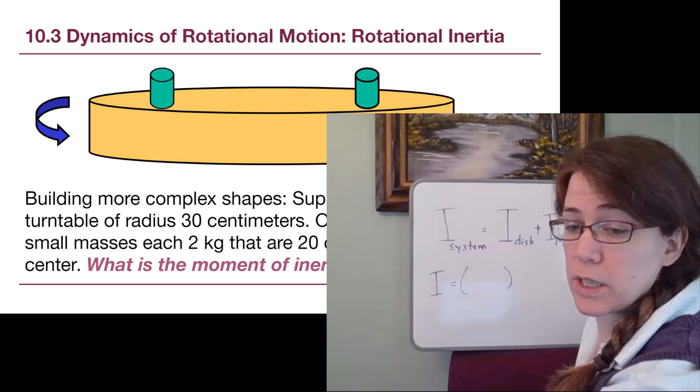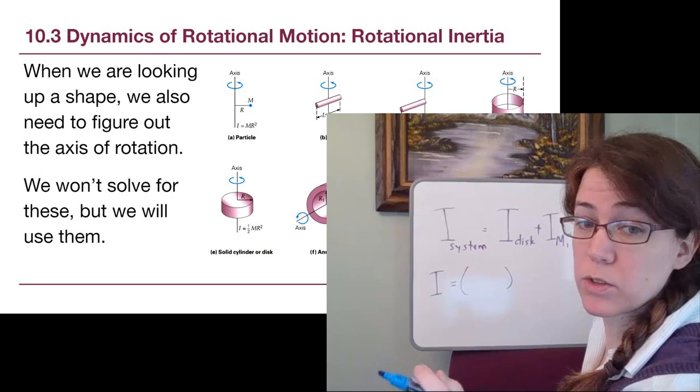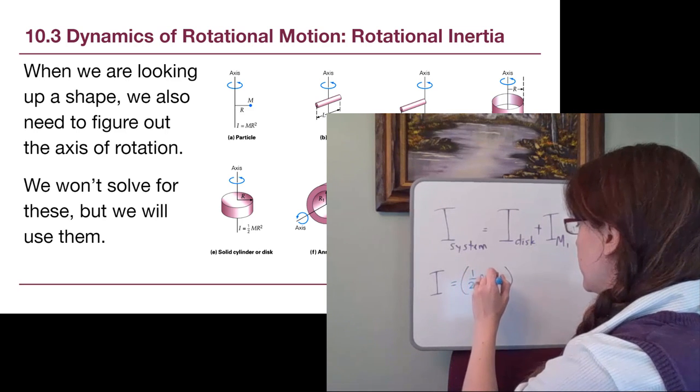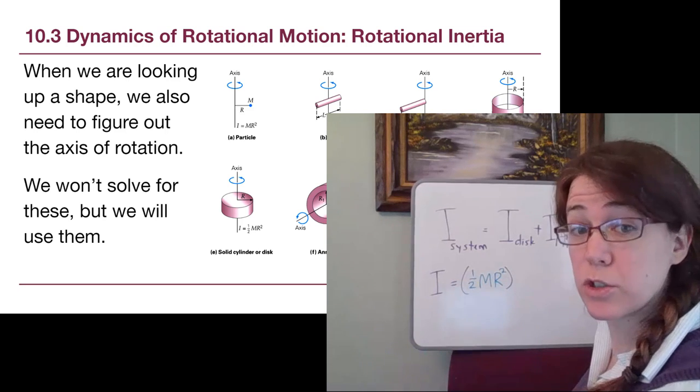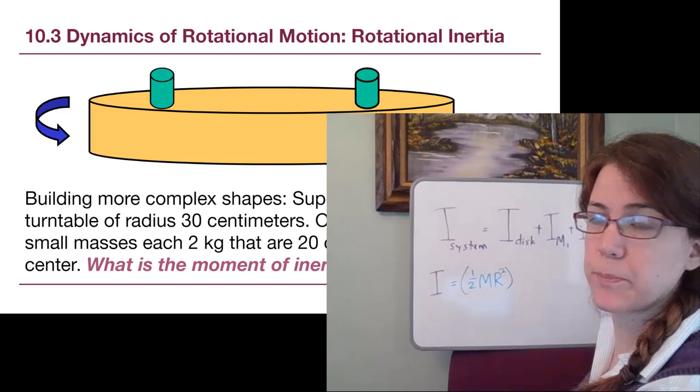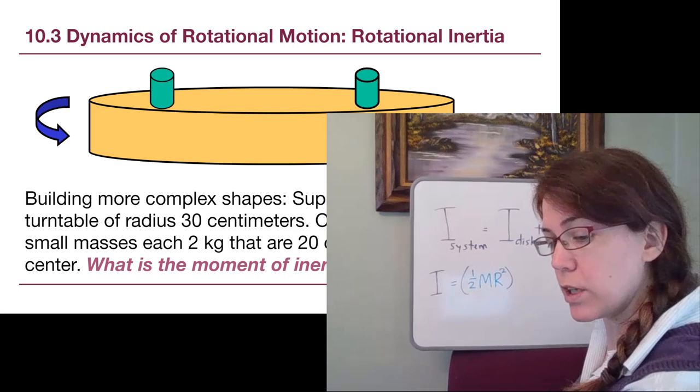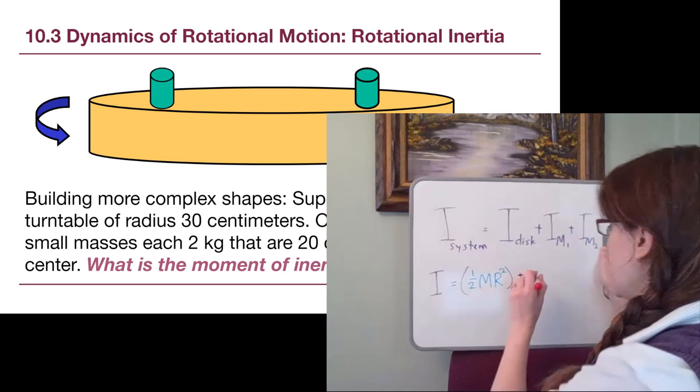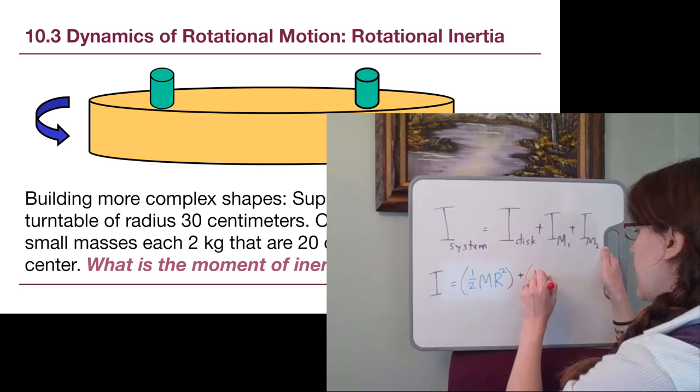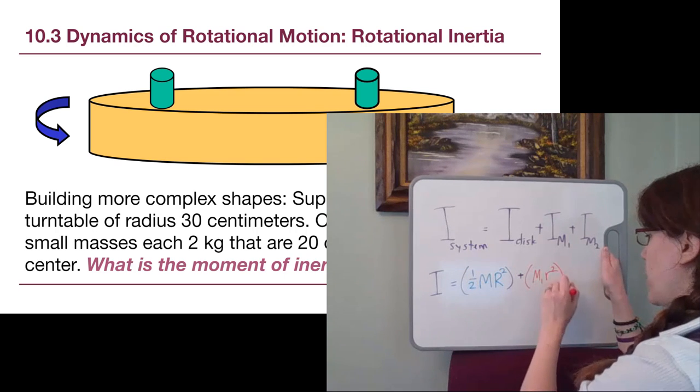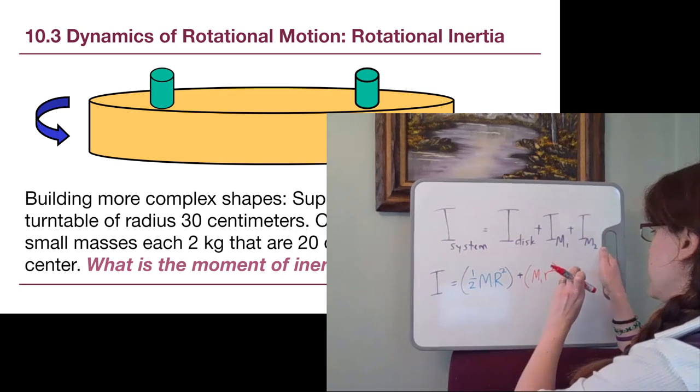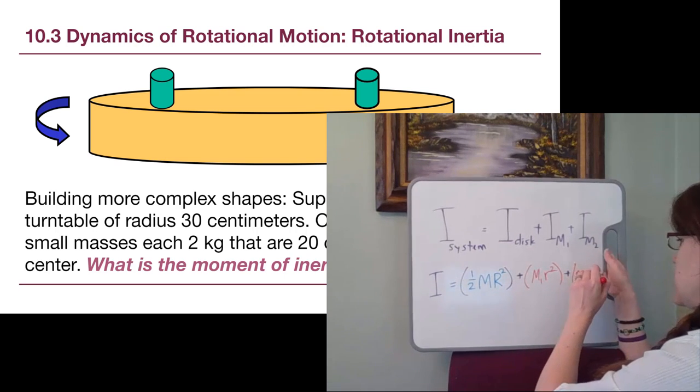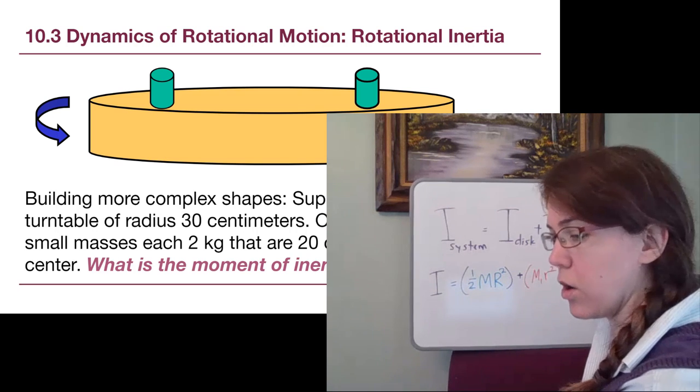For a disk, if we go back and look for a solid cylinder or disk, then we're told that it's one half m r squared if it is rotating around the center, which that turntable is rotating around the center. If we look at the mass that's a certain distance away from the center, then that's just that small mass times the distance squared, and the other term, same idea here, the small mass times the distance squared.